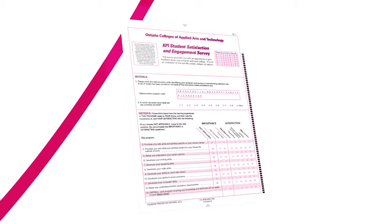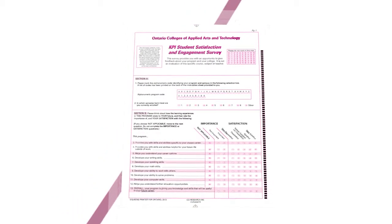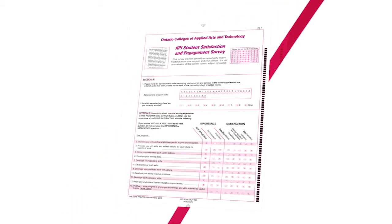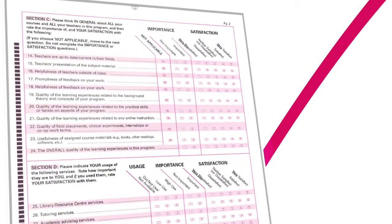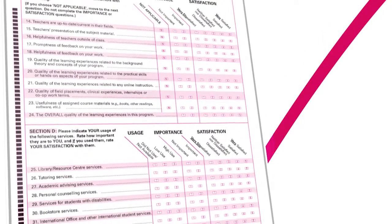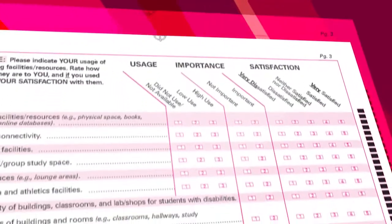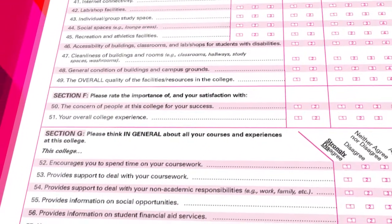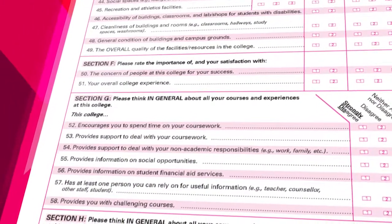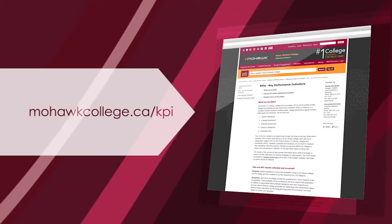The survey consists of 11 sections in total and each section was designed to measure slightly different aspects of your experience. Embedded in each survey section are questions referred to as capstone questions — a question that asks the respondent to give his or her overall opinion about a central issue. Make sure that you complete each section carefully and remember every response is valid. The final survey results are posted on the Mohawk College website at the end of the year.